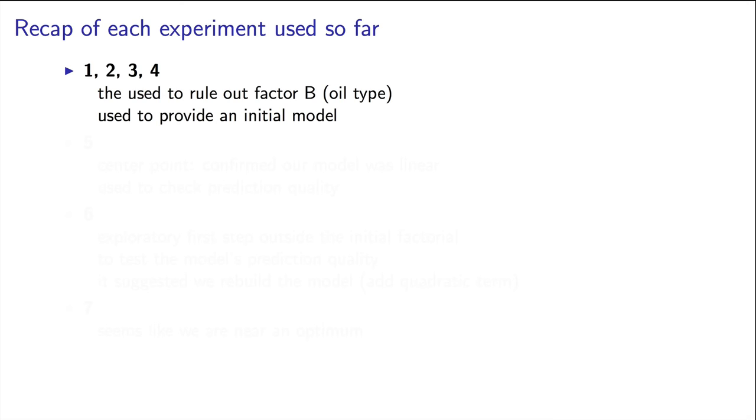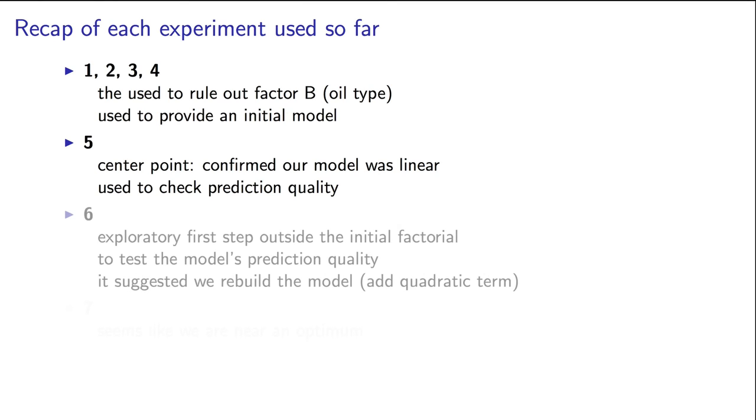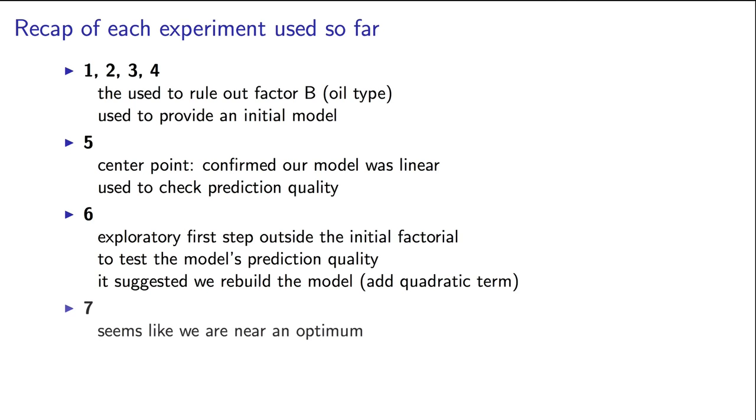The first four experiments were used to rule out factor B, the oil type. And those experiments also gave us our initial model. Then we ran a center point at 135. The center point confirmed that our system was linear, and we used it to check the model's predictions. Experiment six was our first step outside the box. We really tested the model's prediction capacity. We used this as justification to rebuild the model as well. And then our seventh experiment seems to be near the optimum, and I'll say more about that next.